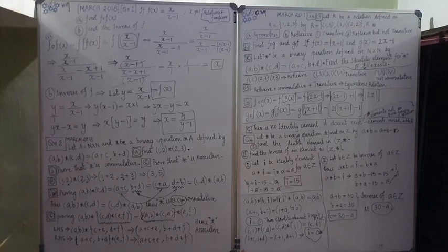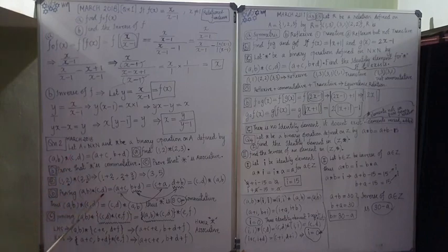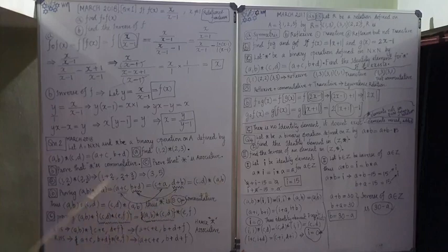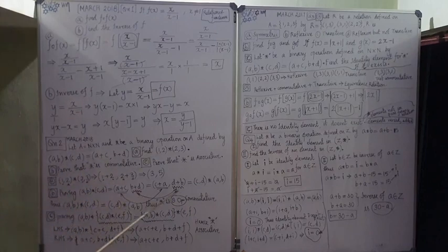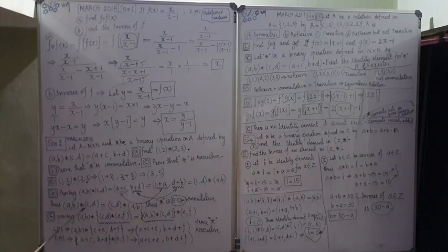Next, prove that this binary operation is commutative. Commutativity means we can interchange the operands and get the same result: (a,b) * (c,d) = (c,d) * (a,b). We try: (a,b) * (c,d) = (a+c, b+d) by the given definition. And (c,d) * (a,b) = (c+a, d+b). Now a+c = c+a and b+d = d+b — both are just addition of two numbers reversed, so they are the same. Thus (a,b) * (c,d) = (c,d) * (a,b), and hence the binary operation is commutative.